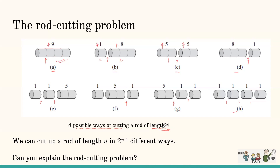Overall, for a rod of length n, there are 2^(n−1) different ways to cut it. For n equals four, we saw eight possible ways: 2^(4−1) = 2^3 = 8. Even for a rod of length four, which human intuition can easily solve, algorithmically we must go through a lot of enumeration.